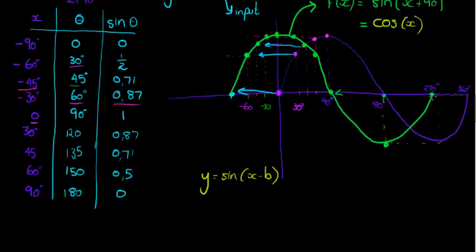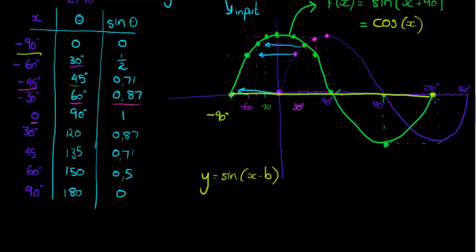The period hasn't changed either. You might think the period is now 270° because that's when the cycle completes, but remember, the period is how long a complete cycle is, not where it ends. The complete cycle now starts at −90°, so from −90° to 270° is still 360°. The only thing that has changed is position. So b is a positional parameter — it changes the position.